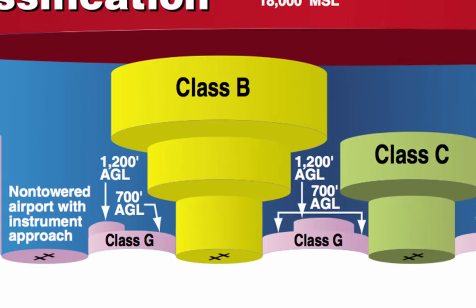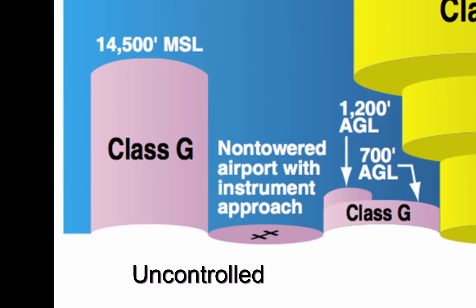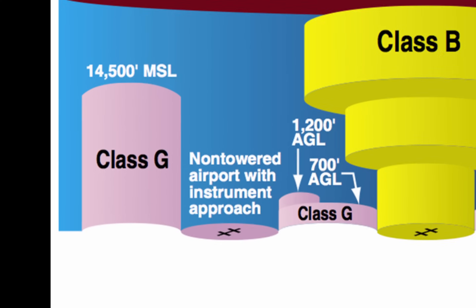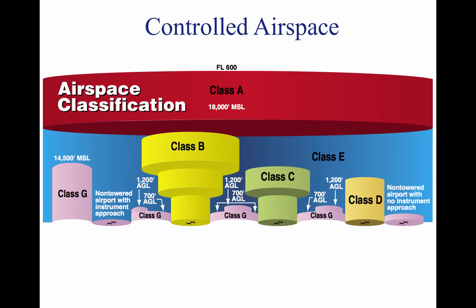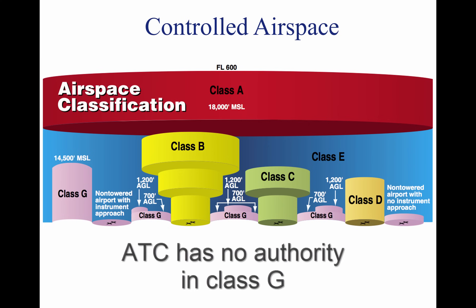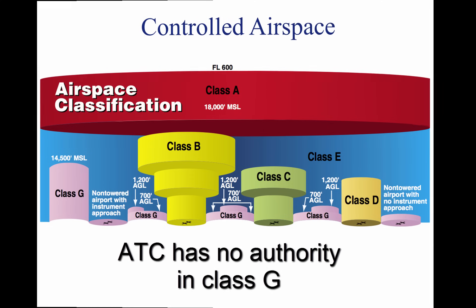The next type of airspace is uncontrolled, or Class G airspace. This is all airspace that is not A, B, C, D, or E. Air traffic control has no authority in this area, but pilots should remember that there are visual flight rule minimums that apply.